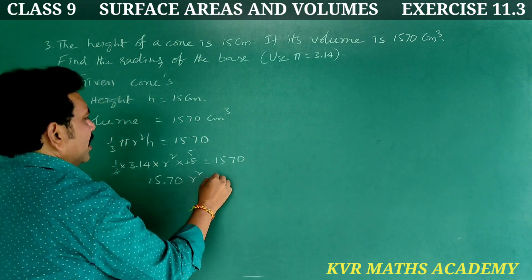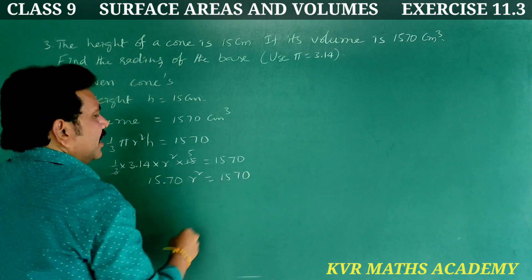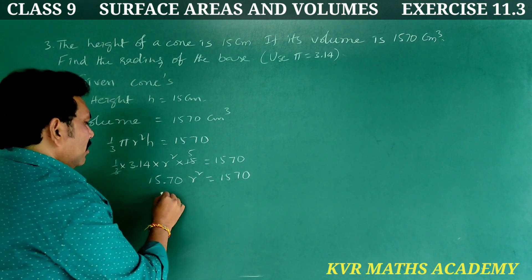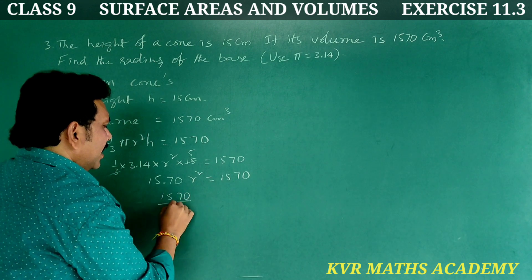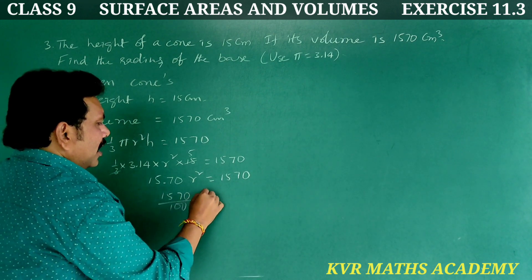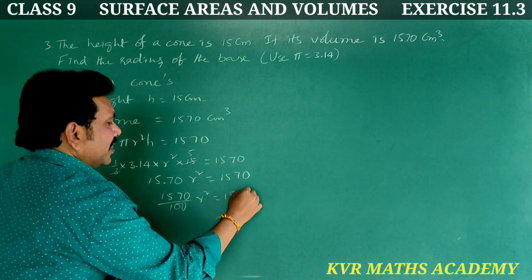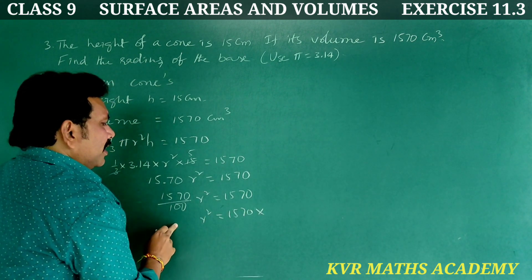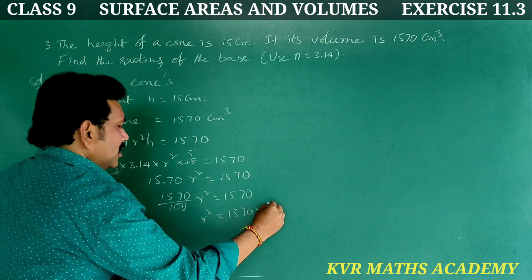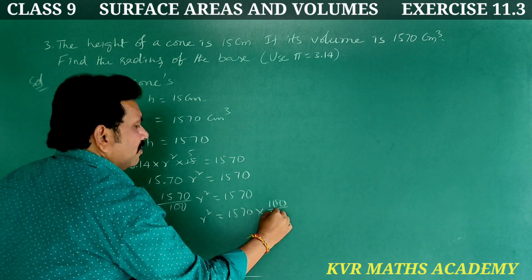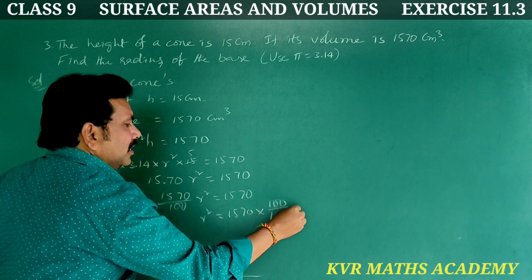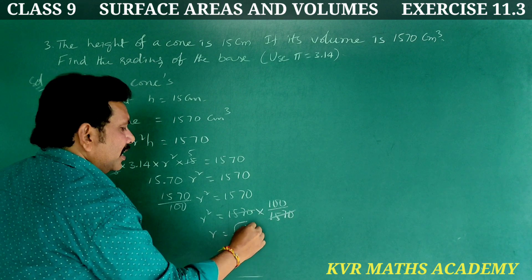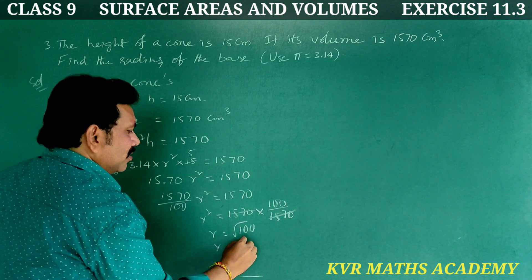R square is equal to 1570 divided by 15.70. R square is equal to 100. R is equal to root of 100, and that is equal to R is equal to 10.